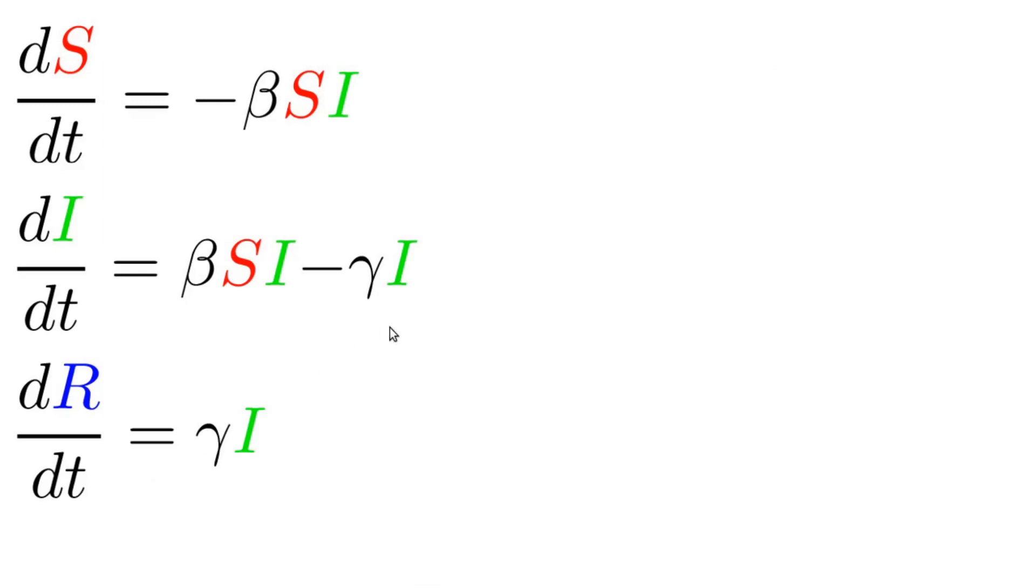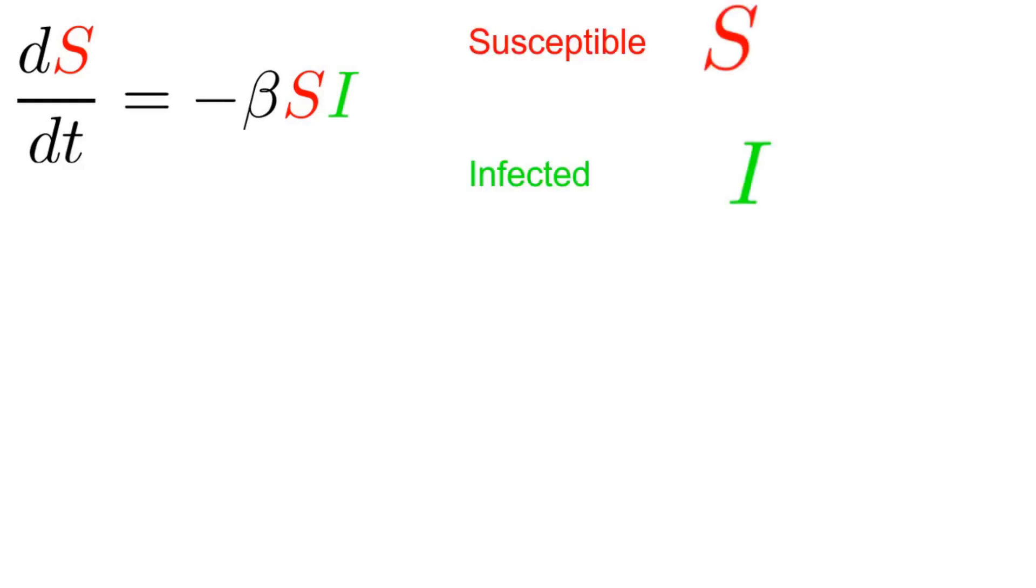This notation might look kind of imposing, it's a lot to process all at once, so let's pare it down to just one equation. Let's remember what this equation is describing. It's describing a relationship between two quantities, S and I. S stands for the susceptible population and I stands for the infected population.